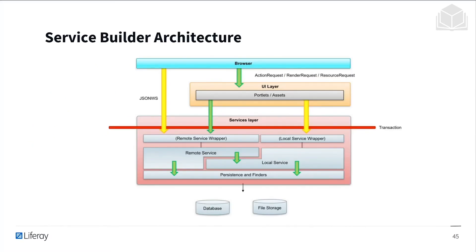Here's an example of a service builder architecture. In the red, you can see the services layer, which is what we're talking about right now. At the very bottom, we have the database and file storage, which interact with the persistence and finders. Above that are the local service and remote service layers, which call the different finders and persistences linked to the database. Then you have any wrappers you can add to do preprocessing, post-processing, and additional checks — this is the layer closest to the user.